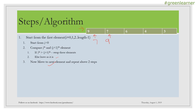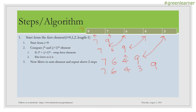Now move to the next step and repeat. I compare nine and six — nine is greater than six, so I swap them, giving seven, six, nine. Then I compare nine and four — nine is greater, so I swap again: seven, six, four, nine. Next I compare nine and three — swapping gives seven, six, four, three, nine. After completing the first iteration, the largest element, nine, has reached its final position at the end.